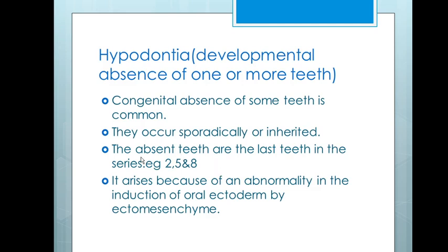Hypodontia can occur in both deciduous and permanent teeth. It arises because of an abnormality in the induction of the oral ectoderm by the ecto-mesenchyme. It occurs more frequently in females than males. It is also important to know that the presence of conical teeth is often associated with the absence of the same tooth on the opposite side of the arch.